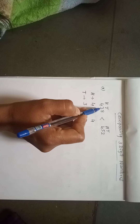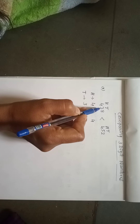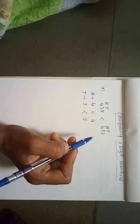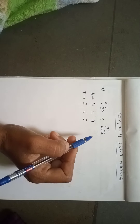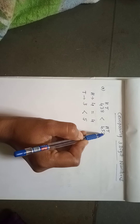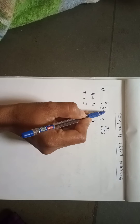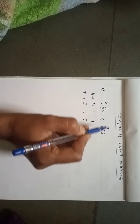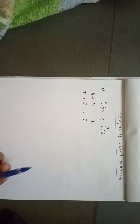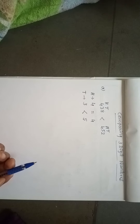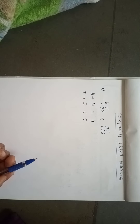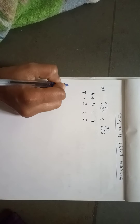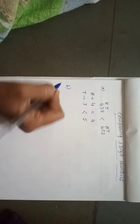If the 10th place number is also the same, then you should go to the next place value, that is the ones place. You need to compare the ones place number, and whichever is bigger, you should select that as the bigger number.